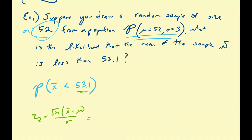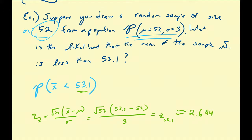In this case, that's equal to the square root of the sample size 52, times the sample mean of interest 53.1, minus the population mean 52, divided by the standard deviation of 3. So z of 53.1 is approximately equal to 2.6441.